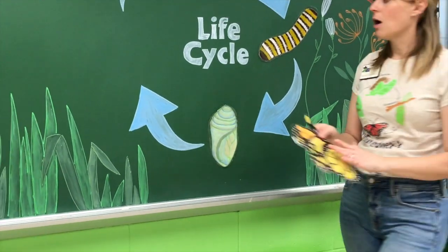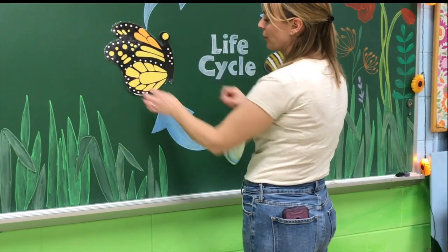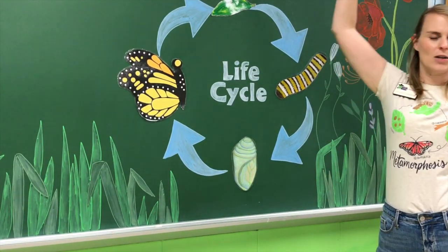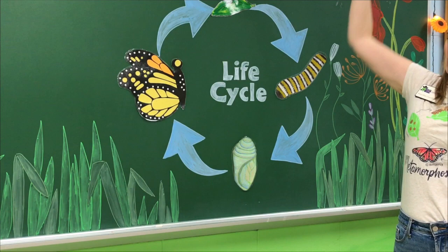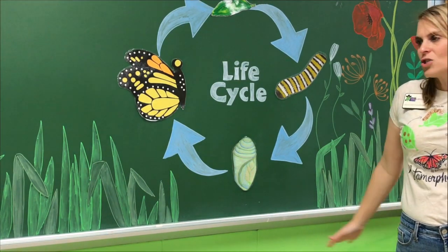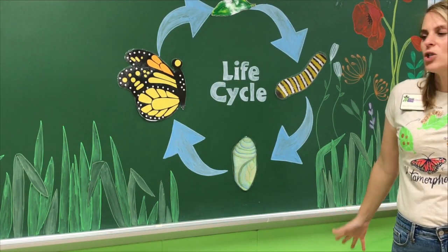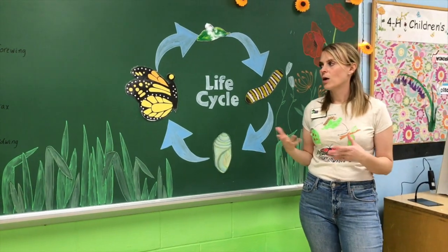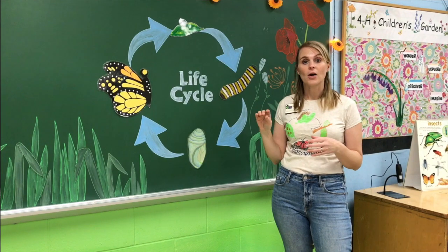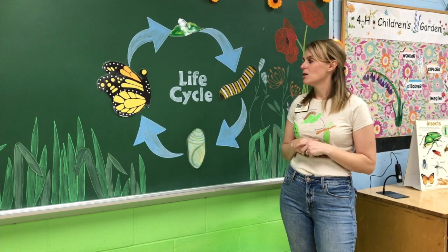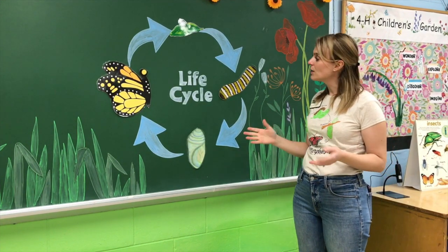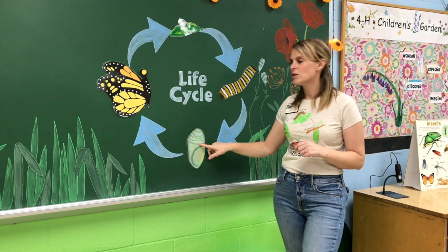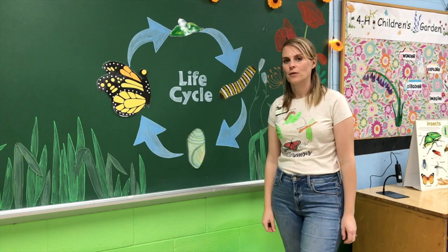The final stage of our life cycle is the butterfly. When this butterfly comes out, the first thing it has to do is stretch — stretch out like you're stretching your butterfly wings. They also have to dry their wings off. In the butterfly house today, we're going to be able to see butterflies hanging, drying their wings, and stretching them out, as well as hungry caterpillars and cozy chrysalis homes.